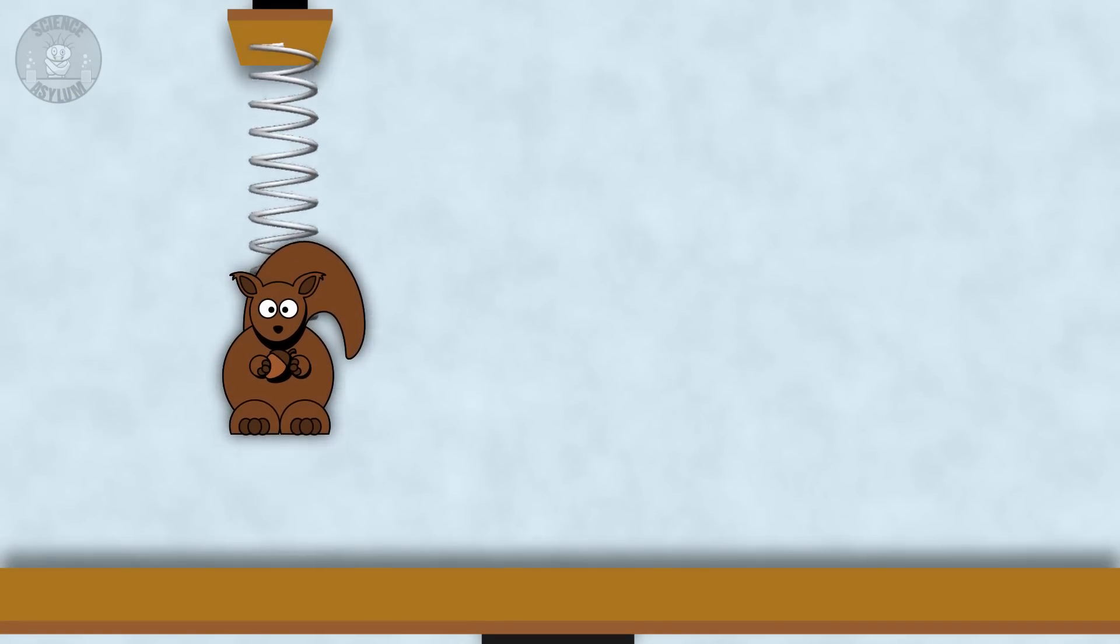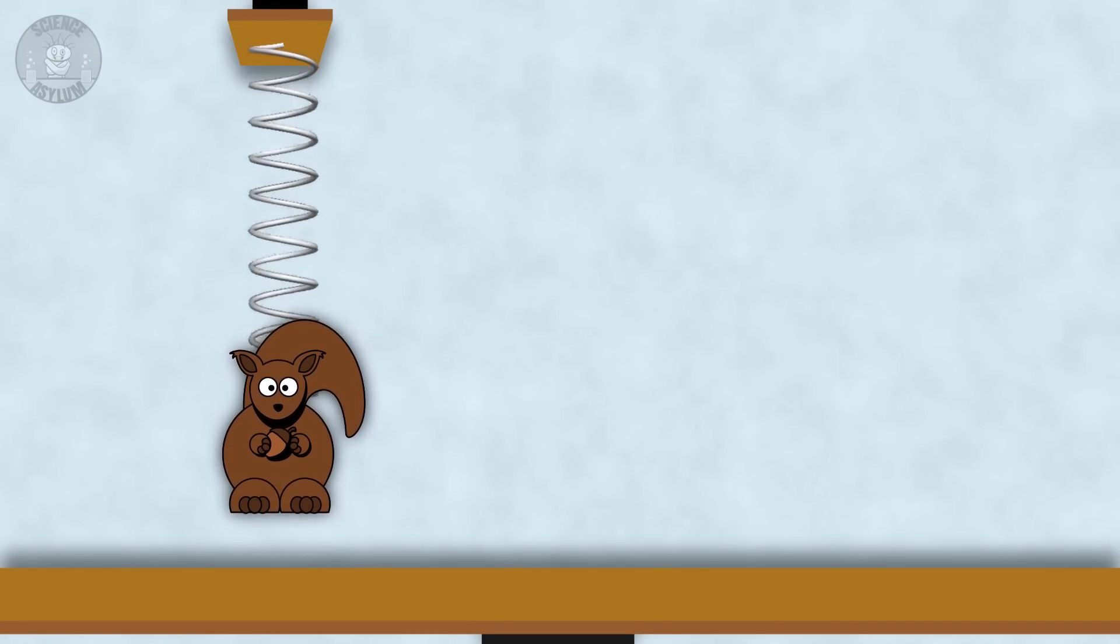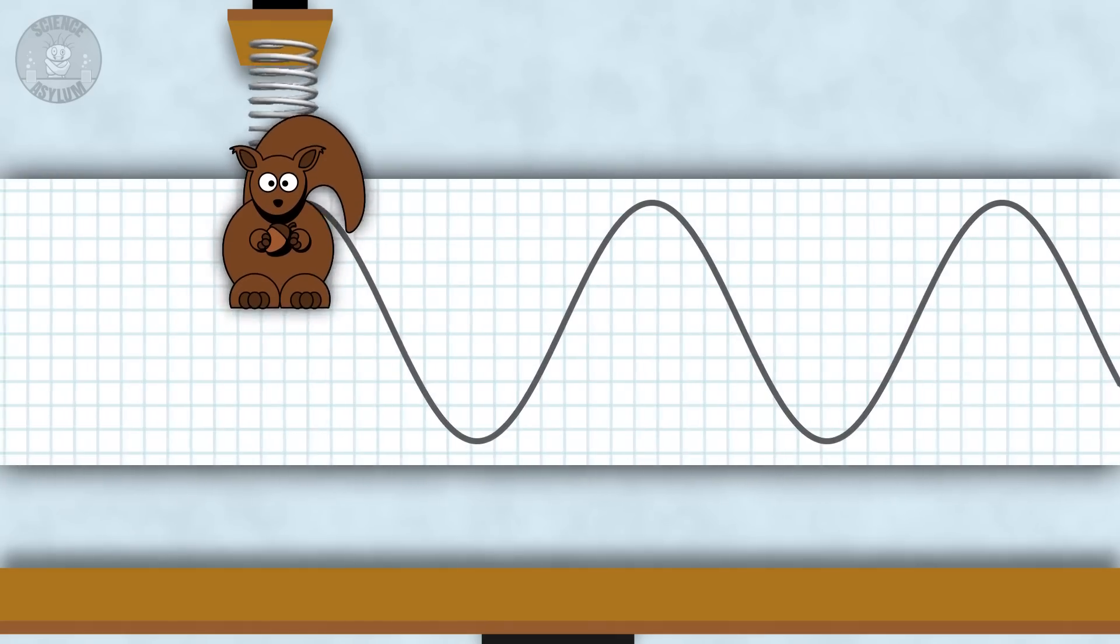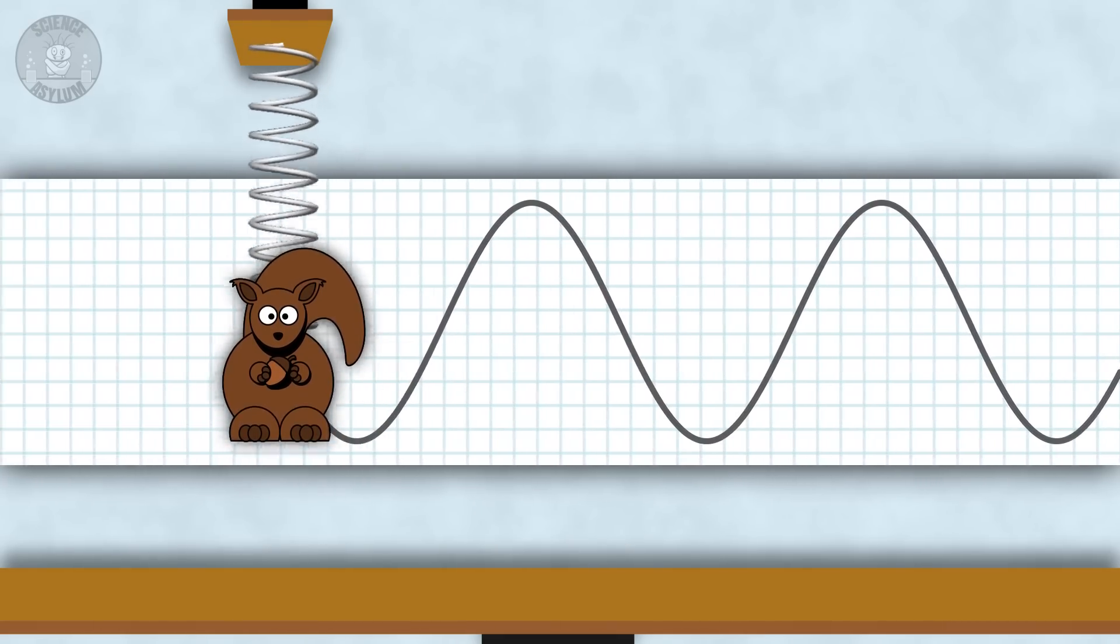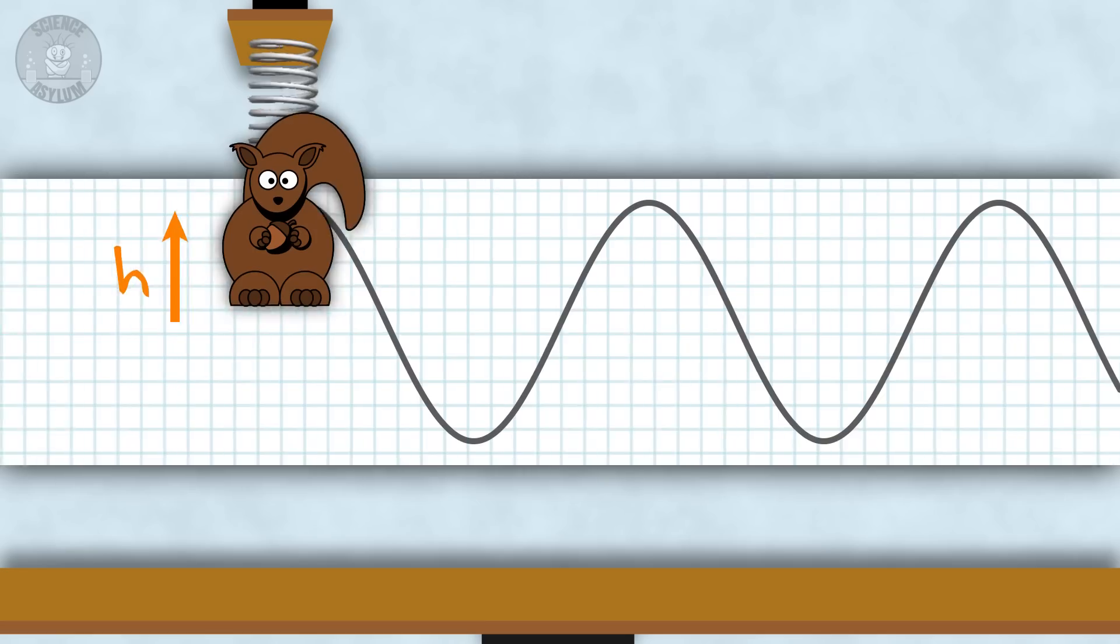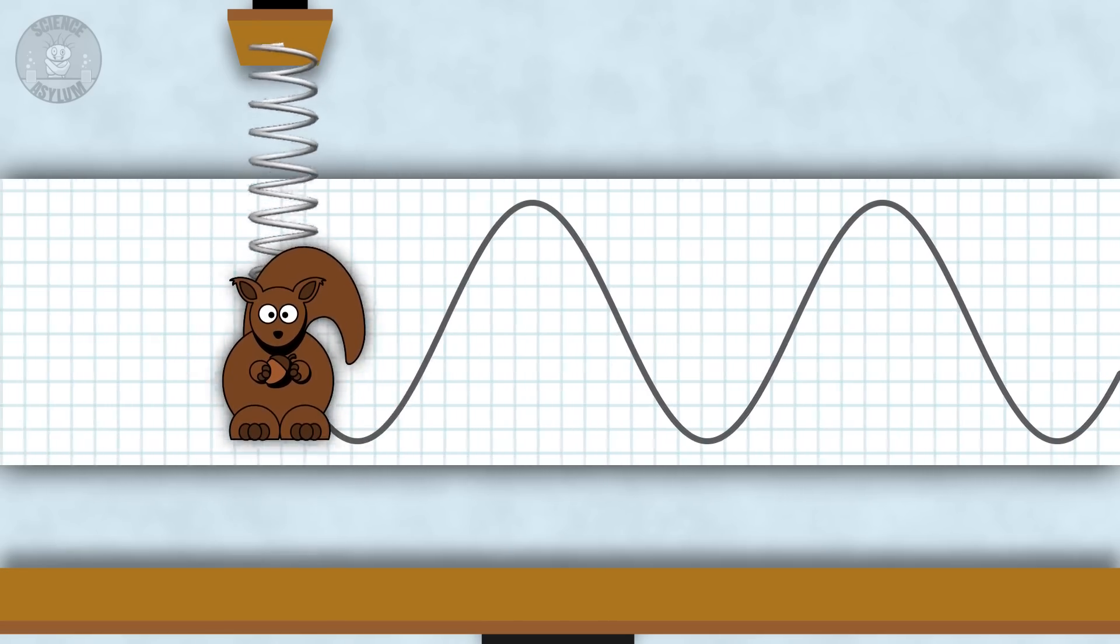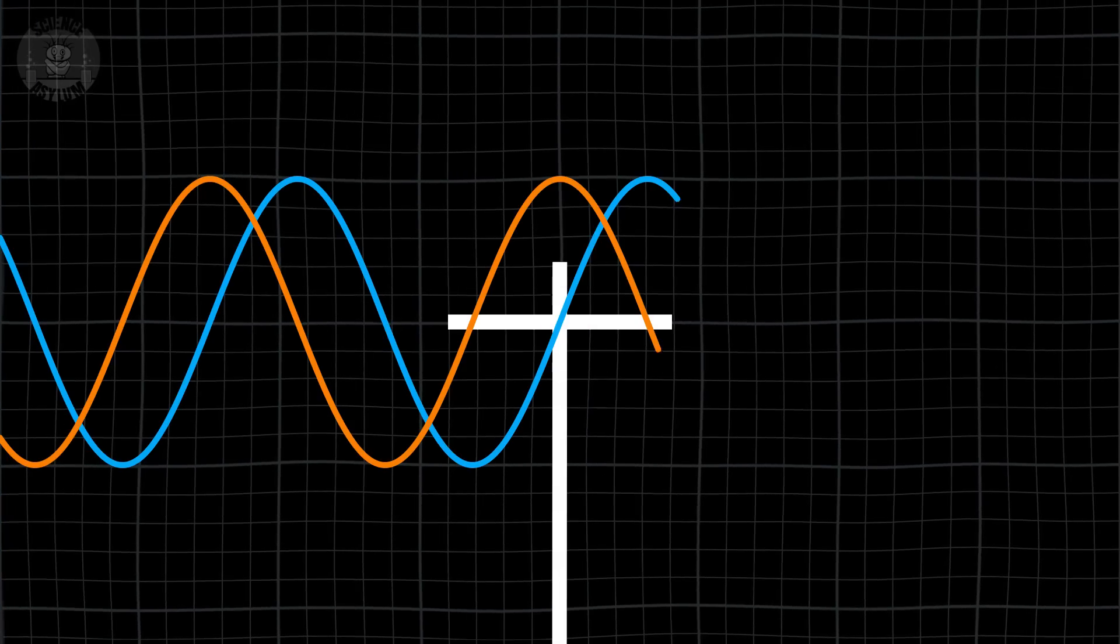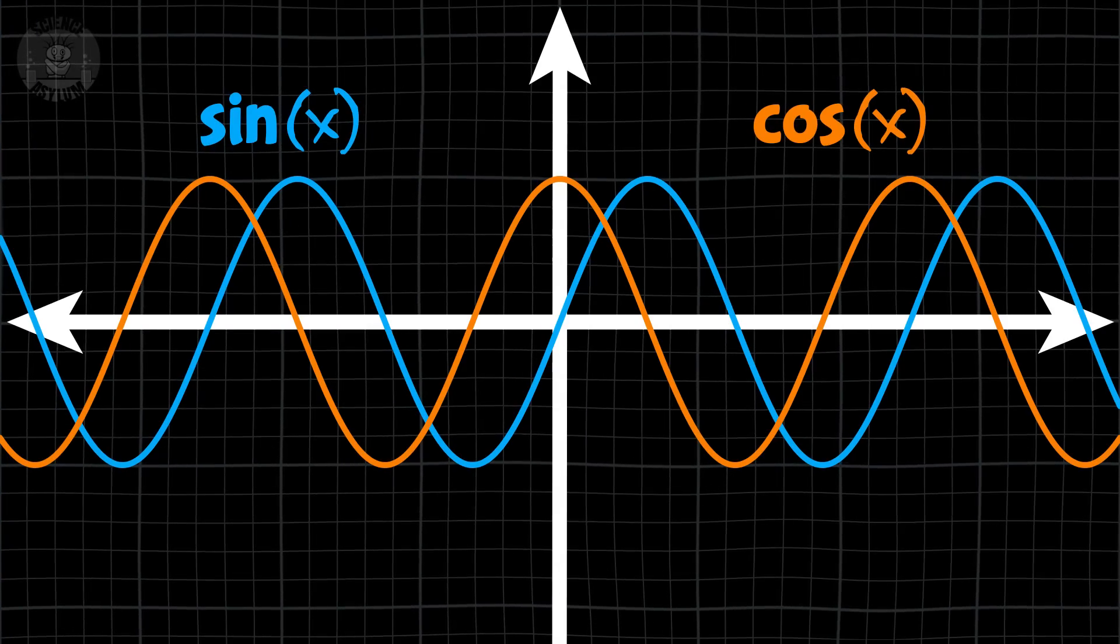Let's attach the squirrel to a spring and give it a little bounce. Put some moving graph paper behind it and bam, we've got a wave. The height of the squirrel depends on time, so we say it's a function of time. Since its shape is wavy, we call it a wave function. And it's written using some kind of sine or cosine because we know those look wavy.